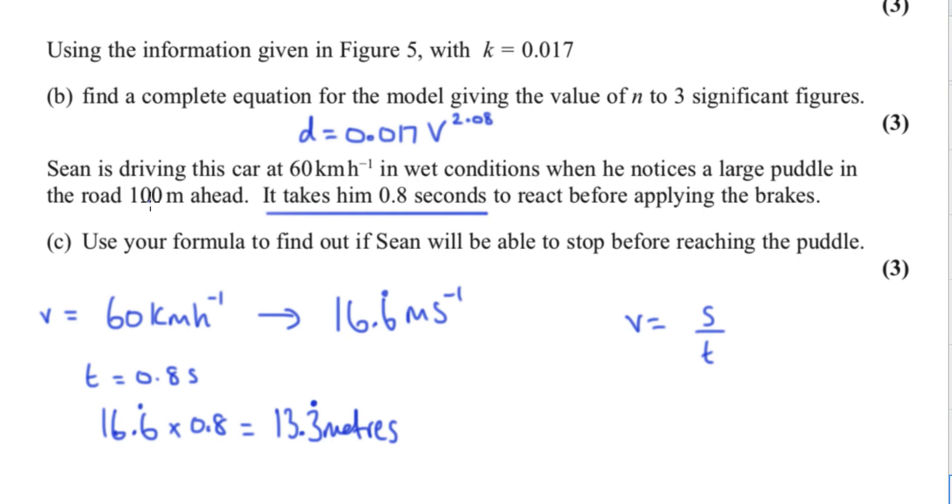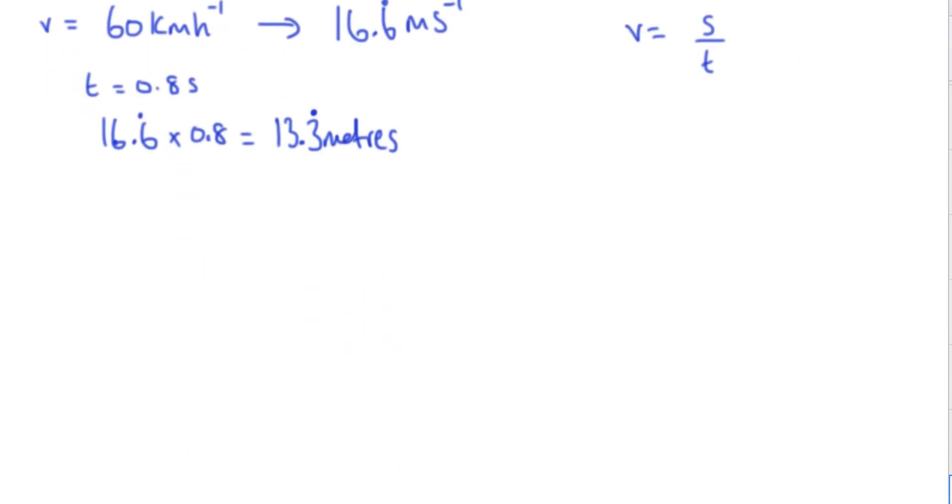So he's actually only got 86.6 recurring meters to stop. Does he stop in less than 86.6 meters? That's what we're going to find out using the model. So the model is d equals 0.017 times v, which is 60, to the power of 2.08.